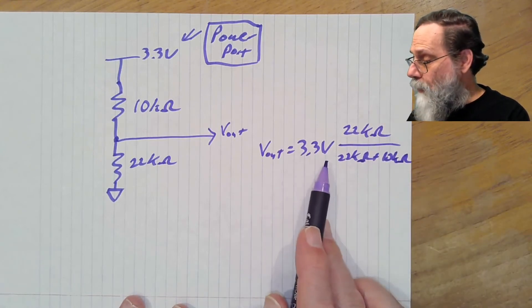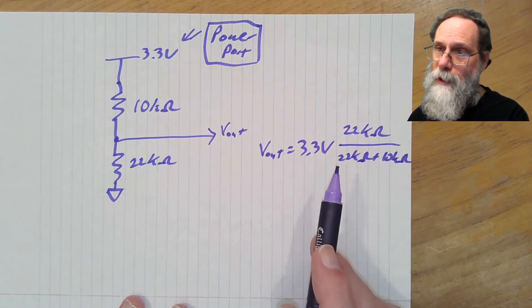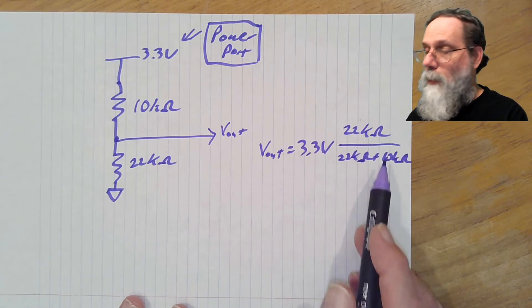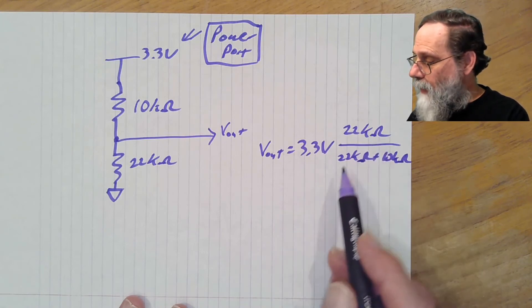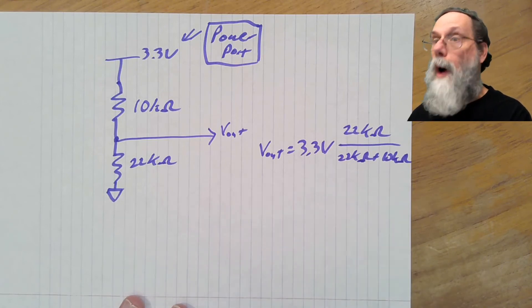And notice that I've included the units as I've written each of these things. Always include your units when you're writing your formulas with numbers. If I'd written 22 here, it'd be confusing. Is it 22 ohms, 22 kilo ohms, 22 mega ohms, 22 watts?